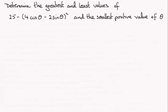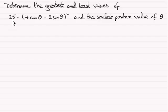Hi, now for this question we've got to determine the greatest and least values of 25 minus (4 cos θ minus 2 sin θ)² and give the smallest positive value of θ for which these values occur.